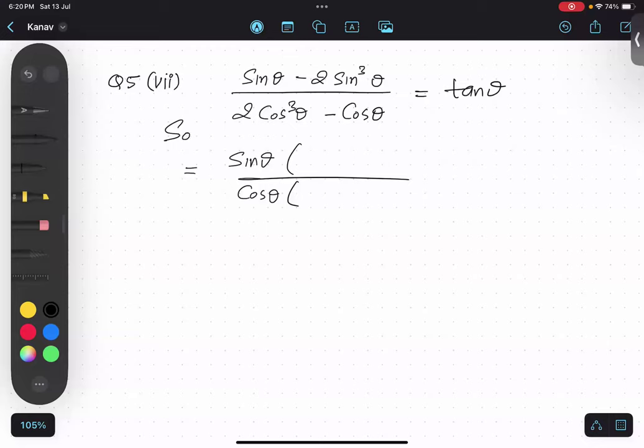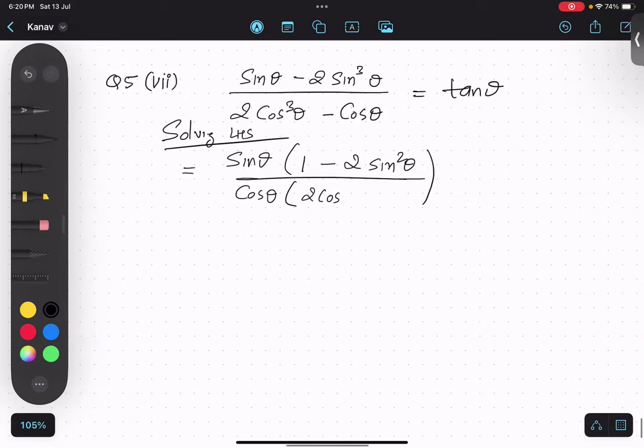And over here, solving LHS. Now, what is remaining in the numerator? 1 minus 2 sin square theta. And denominator: 2 cos square theta minus 1. Make sense? Yes.